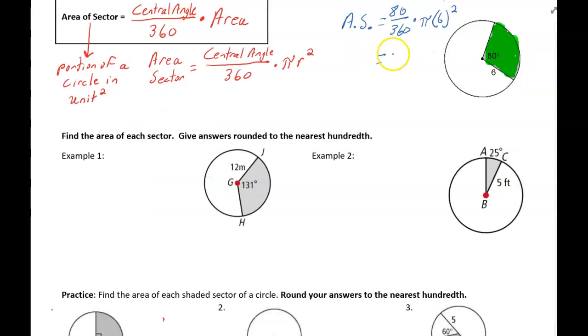So the area of this sector is 8 pi units squared. And then if you were to multiply 8 times pi, you're going to get approximately 25.13 units squared. So the area of a sector is central angle over 360 times pi r squared.